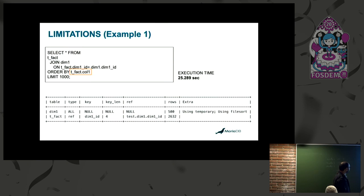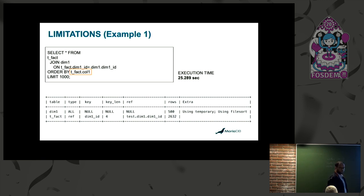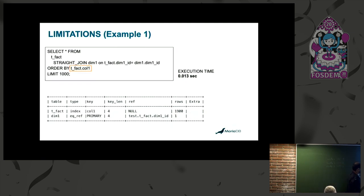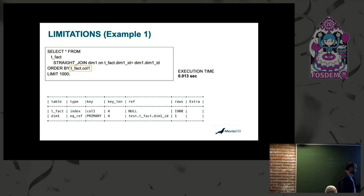Here is an example. We have an ORDER BY on a column that has an index. The join optimizer picks a strategy to compute the entire join and then do filesort, with an execution time of 25.2 seconds. But if I force a particular join order using STRAIGHT_JOIN, T-fact uses an index on column 1 to do the join execution and the execution time drops to around 30 milliseconds. So if the join optimizer knew about this index it could have come up with a much better execution plan.